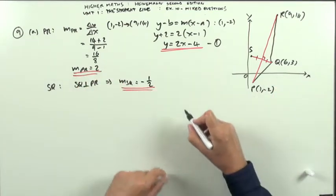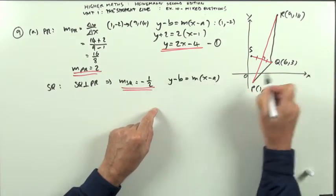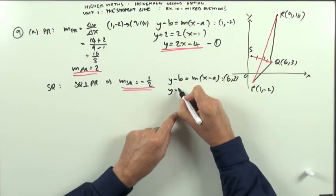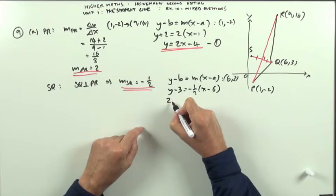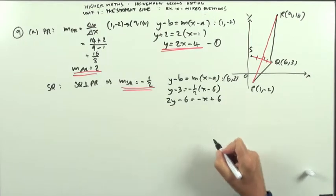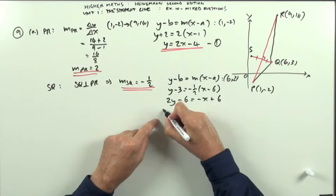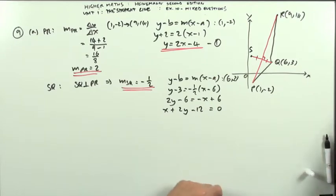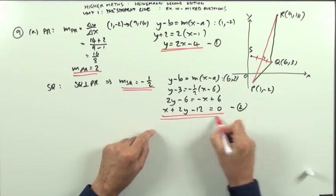I know a point on it, (6, 3), so I can just go straight into the equation. y - b = m(x - a). I'm going to use the point (6, 3). So y minus the y coordinate is negative a half of (x minus the x coordinate). Take the 2 across. 2y - 6. Leave the negative for this side as -x + 6. And for this one, I'll just take it all over to one side. So x + 2y - 12 = 0. Give that a name, number 2.